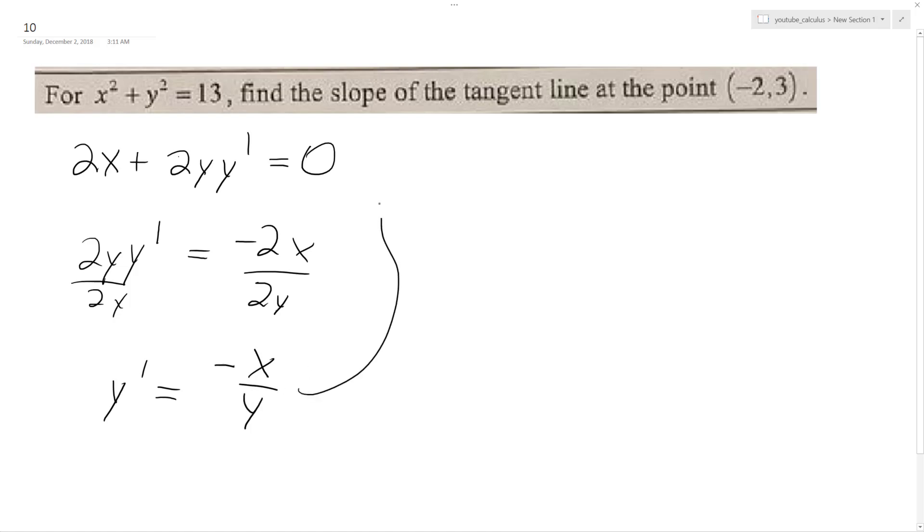So I plug in my points there, negative negative 2 over 3, and what I get is 2 thirds.